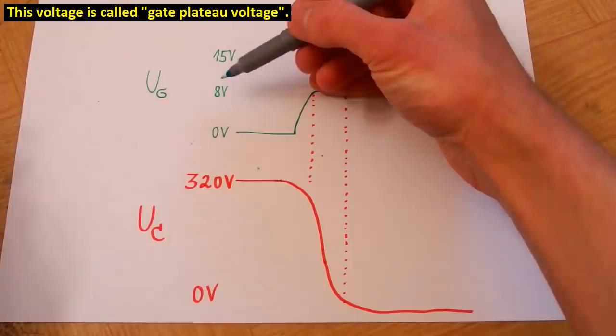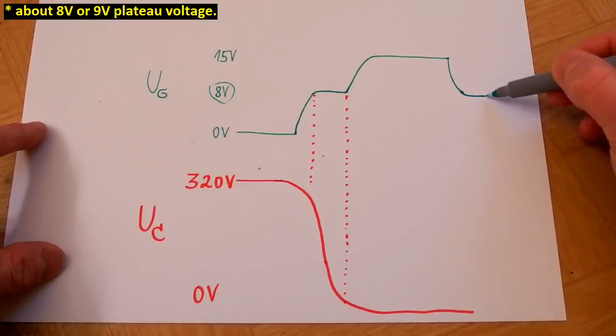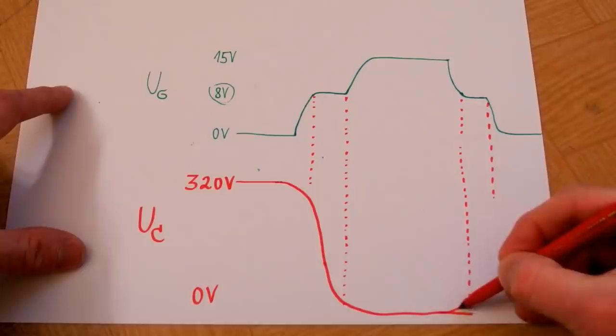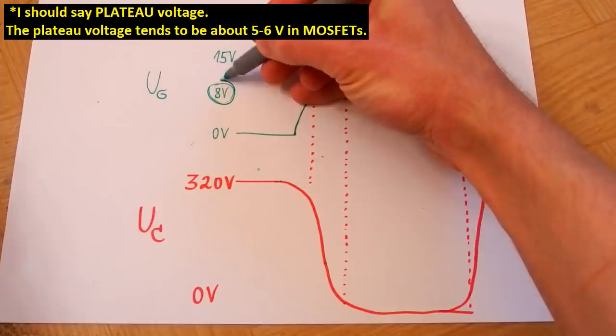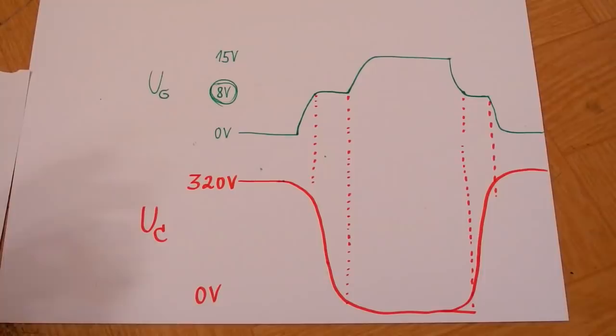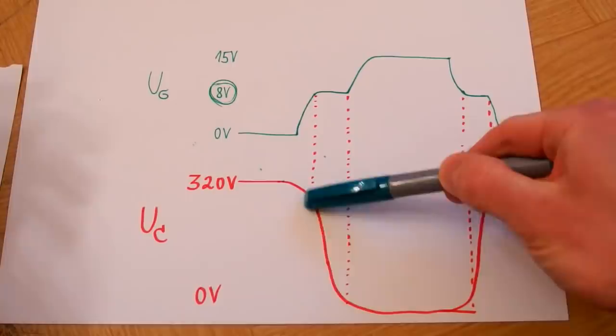This threshold voltage depends on the particular transistor and the current it's switching, but most IGBT transistors at high current will have about 8 volts. A similar thing happens when you turn the transistor off — the gate voltage goes down, gets stuck, then continues. This happens when the collector voltage rises the fastest. A similar problem occurs for MOSFETs too, except the threshold voltage is much lower. Also, all transistors have some delay, so the plateau actually happens a bit later because changes in the collector voltage are delayed.